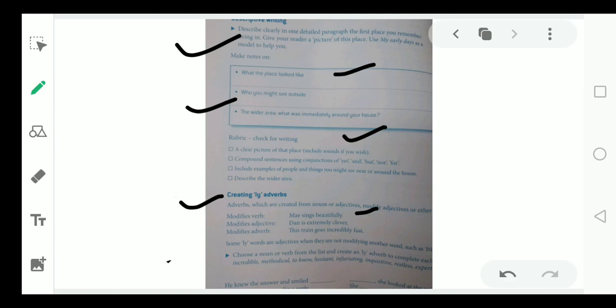And modifies adjective. Now, we are having an adjective clever. And we are writing extremely clever. This is how we are modifying the adjectives. Modifies adverb. This train goes incredibly fast. We are writing about an adverb. But we are creating one more adverb by incredibly. Here some L-Y words are adjectives. When they are not modifying another word such as friend or other. Choose a noun verb from the listed and create L-Y adverb to complete your blanks.